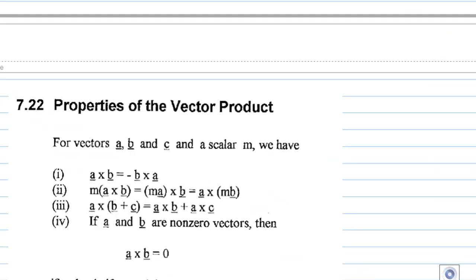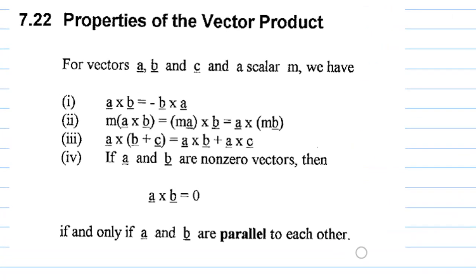What are the properties of this vector product? First, we will find that a cross b is minus b cross a. So a cross b and b cross a have opposite directions.